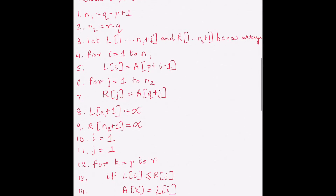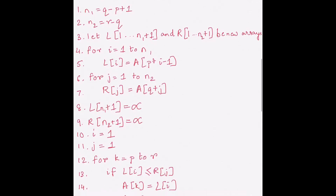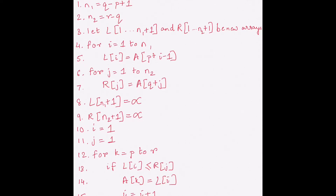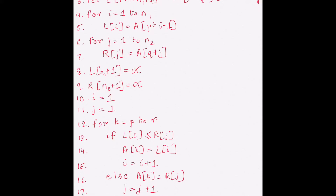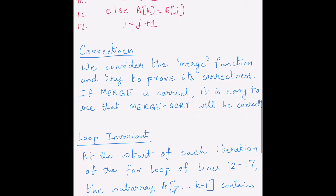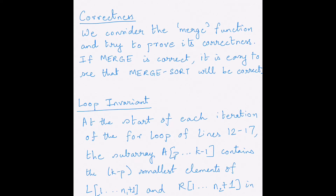In the merge function, you create two new arrays — left (L) and right (R) — and then compare the top elements of left and right, placing them into the main array A in sorted order. The most important part of merge sort is this merge function, so proving its correctness is our focus.